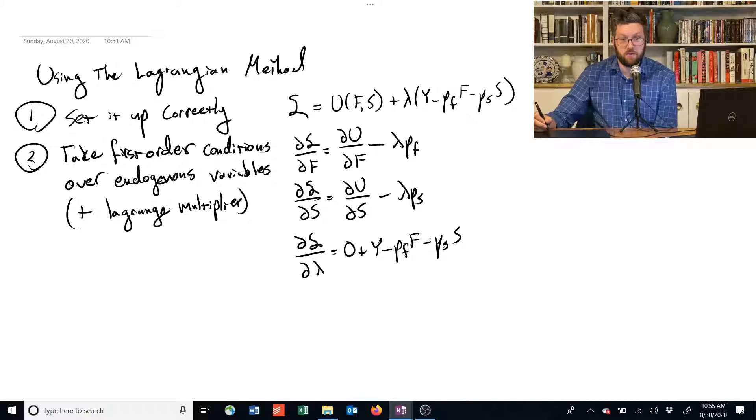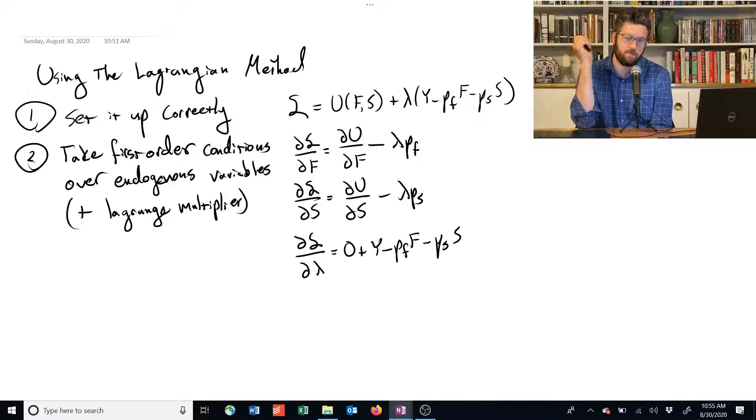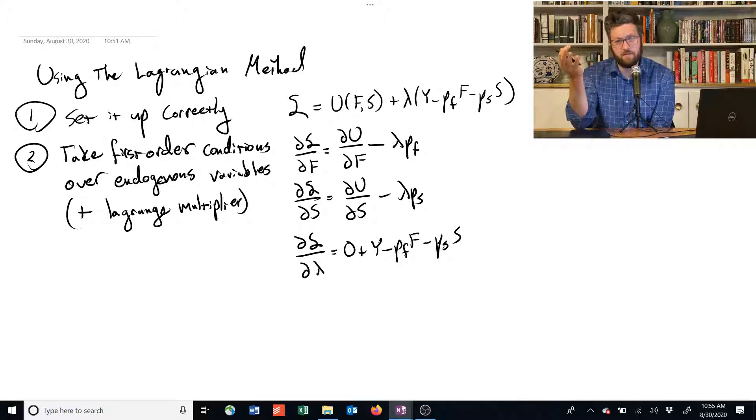Okay, and so we've accomplished step 2, which is to take our first-order conditions over the endogenous variables in the Lagrange multiplier. So, it's not that different from the problem of a firm's maximization problem, which was we set up the profit function and we took derivatives with respect to all their choices.